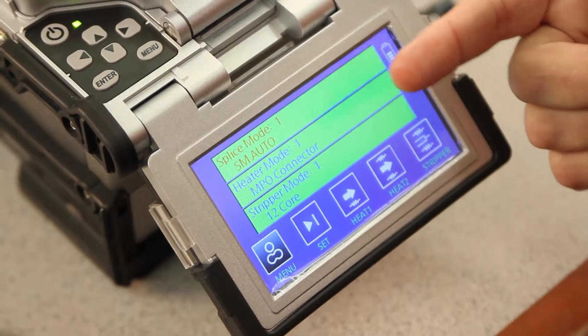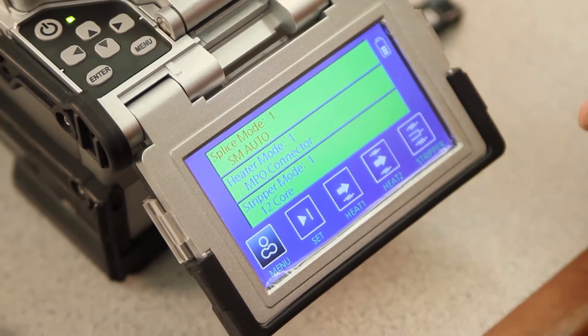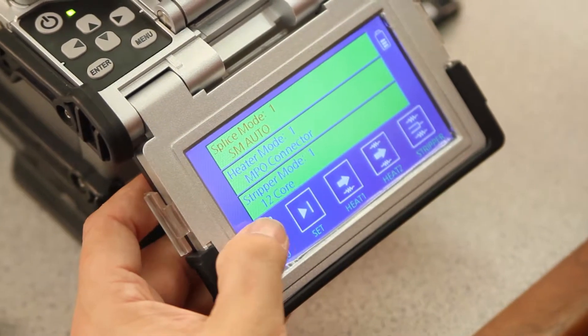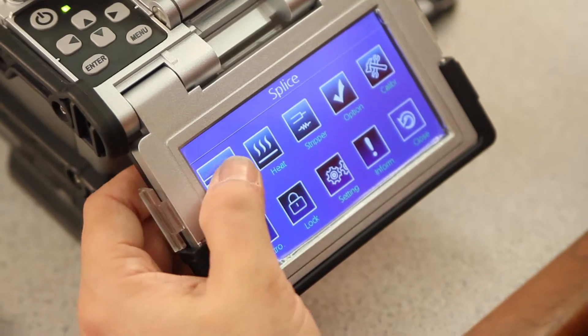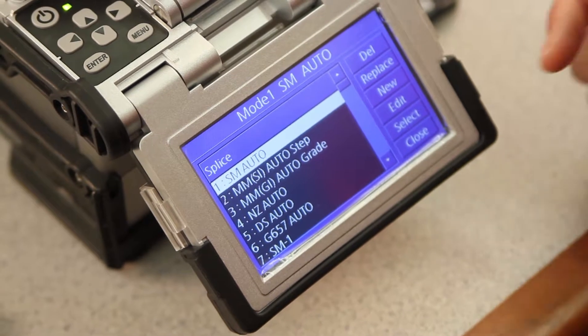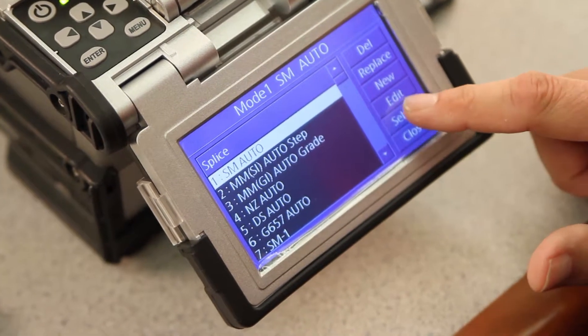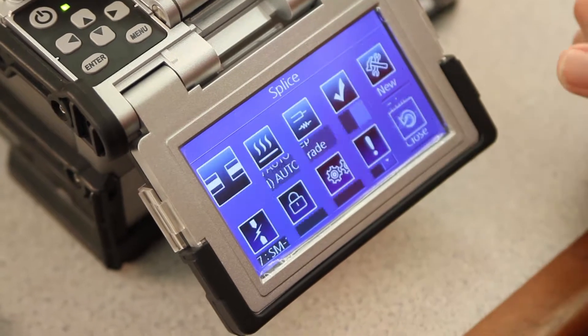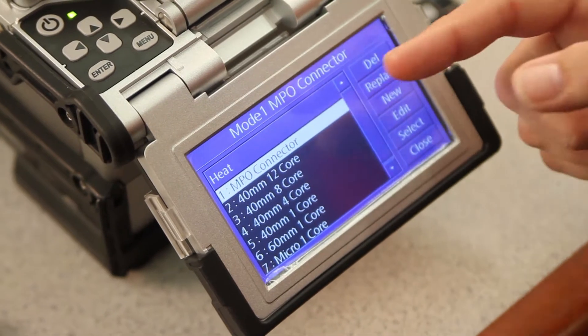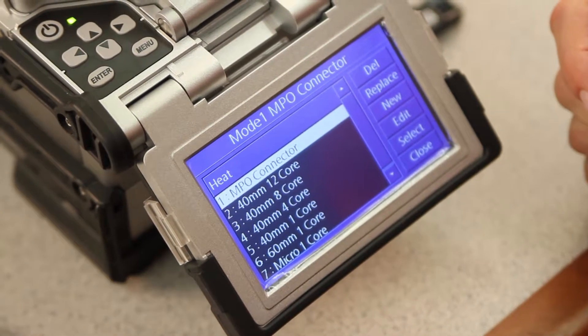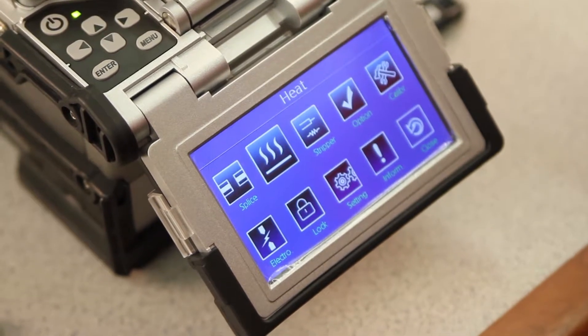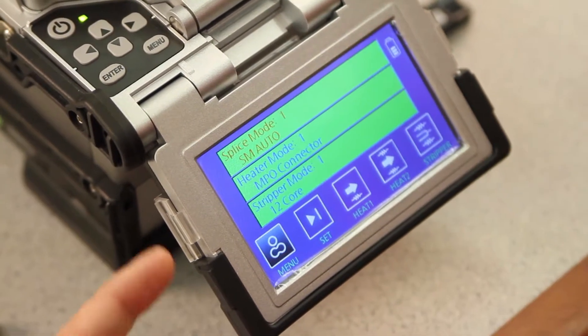Make sure all of your parameters are set correctly. In this case, they are, but if you do need to change them, press menu, splice, select your fiber type, select and close, heat, select what type of heat shrink you are performing, select, close, and then close back to your main screen.